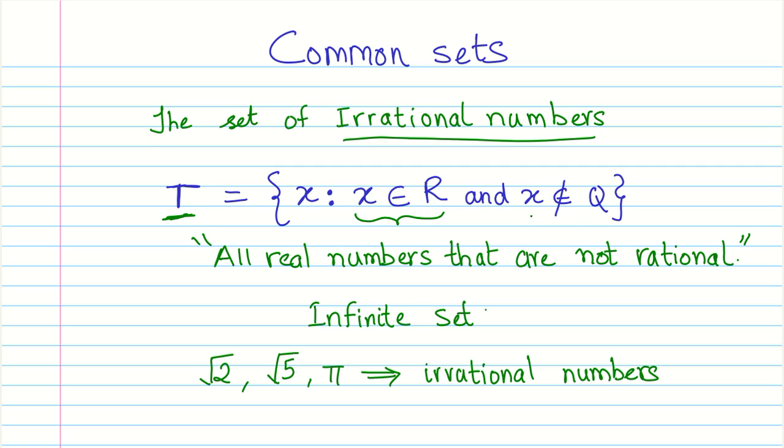This is another way of saying all the real numbers that are not rational. It is an infinite set. To refresh, some irrational numbers are like root 2, root 5, and pi, which is the most common irrational number that we encounter.